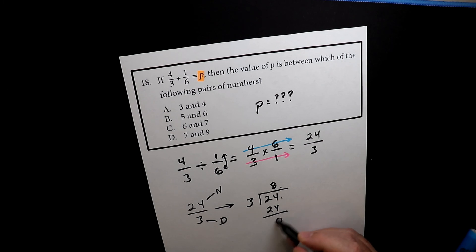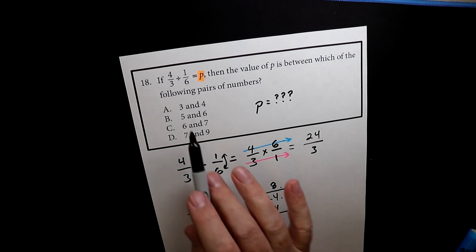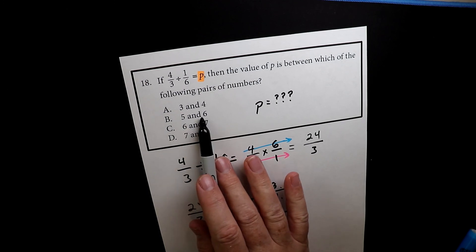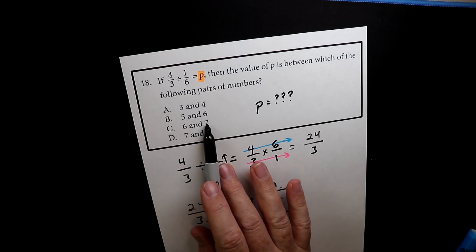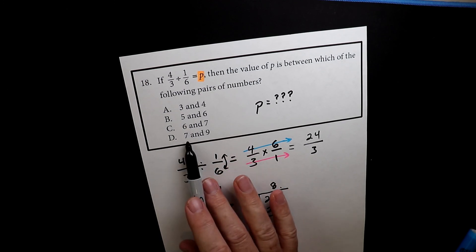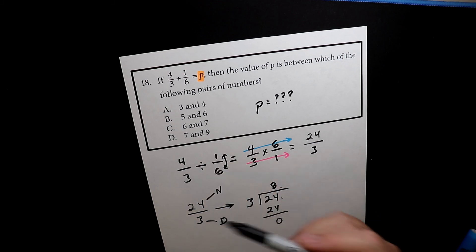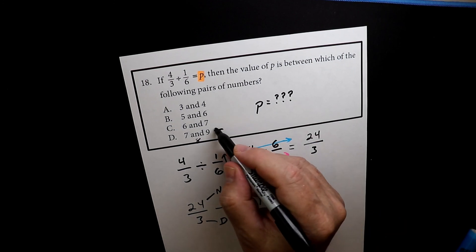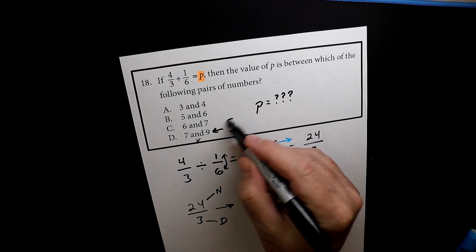So checking the answer choices: 3 and 4 — that doesn't work. 5 and 6 — that doesn't work. 6 and 7 — that doesn't work. 7 and 9 — 8 does live right in between those two, so D is your right answer.